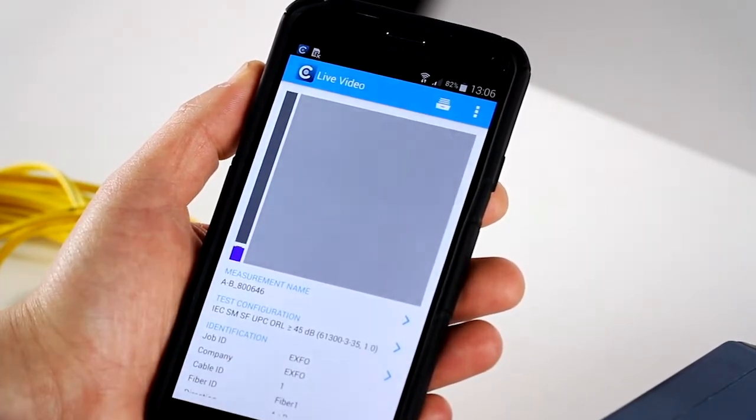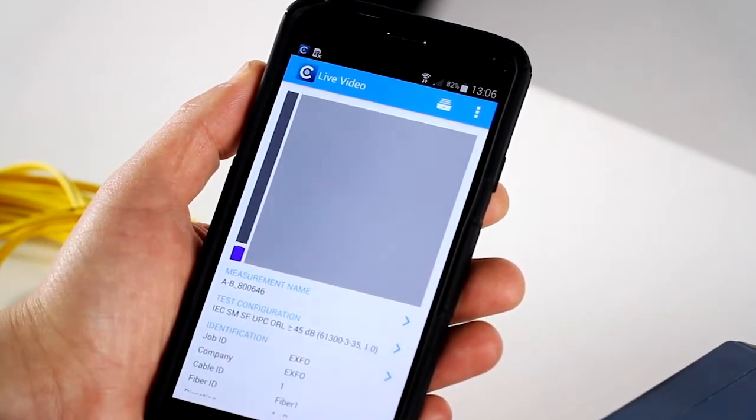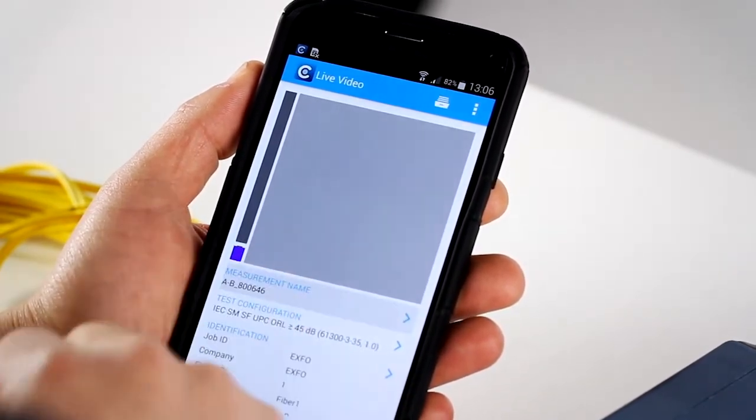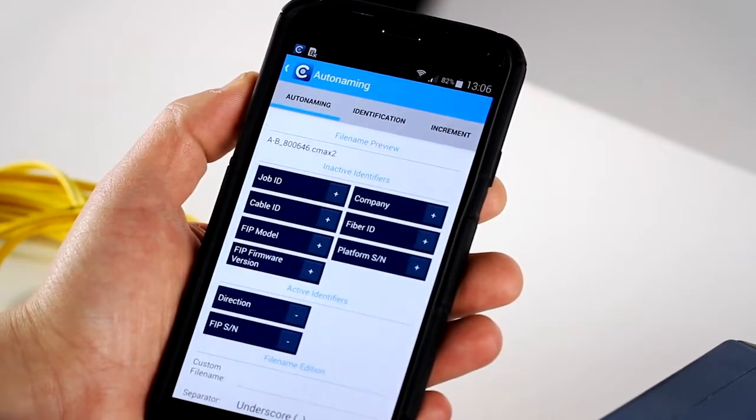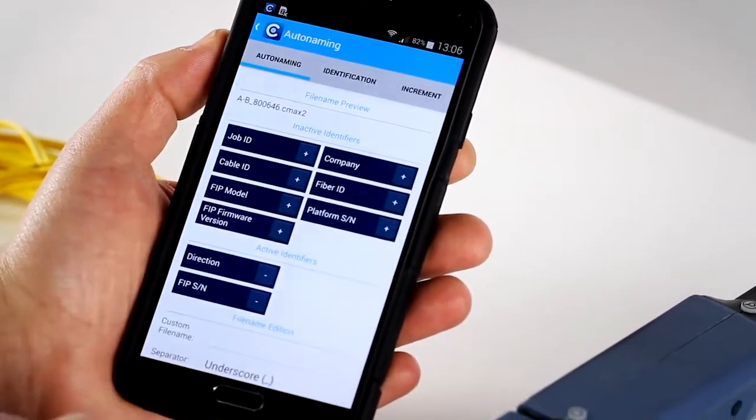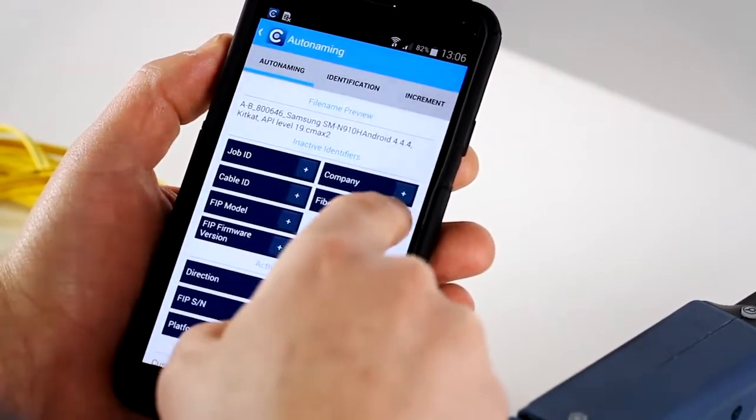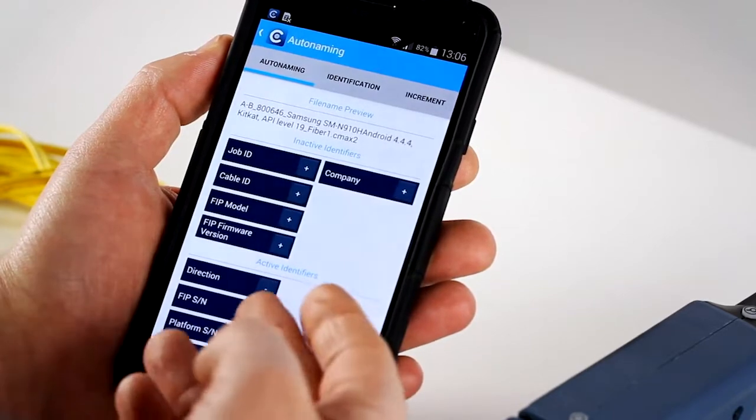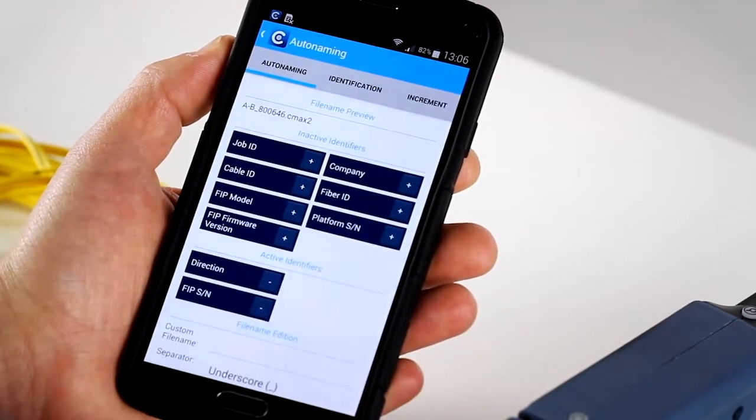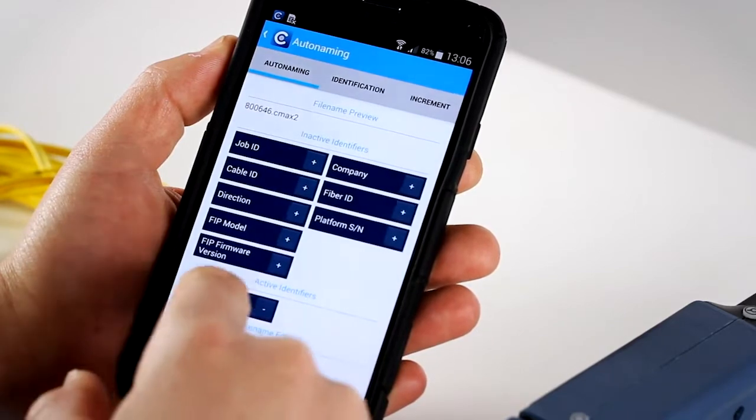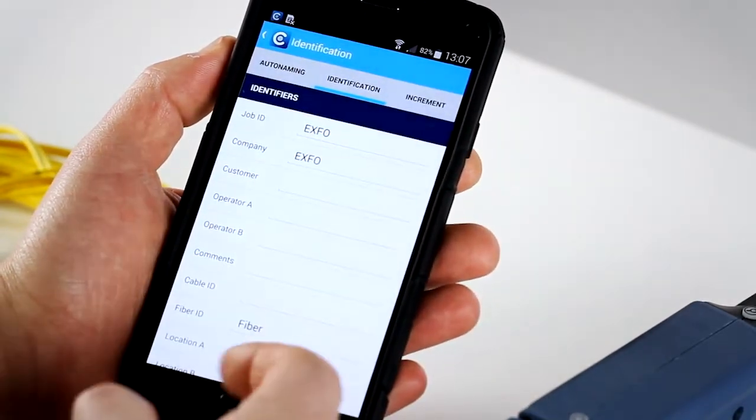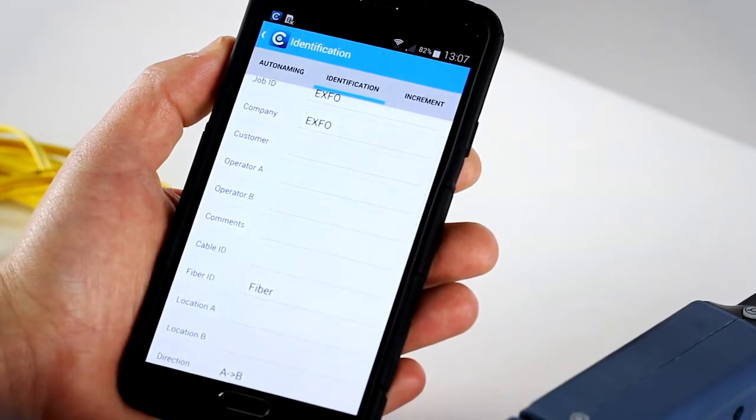Now, before doing the inspection, maybe we can do a little overview of the actual software application. First and foremost, what's interesting is about the different measurement name and identification options that you can have. You can actually decide to include the serial number, FIP model, cable ID, job ID. All of these options, you just press on the little plus button to add it up to the list of the active identifiers, or you remove them really simply like that.